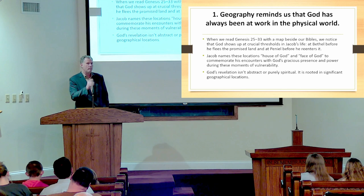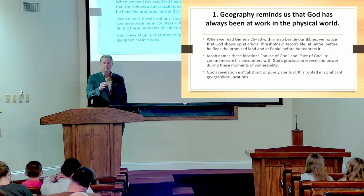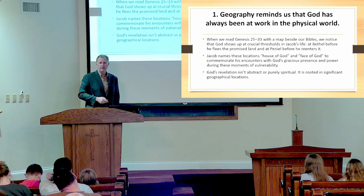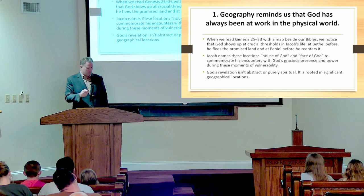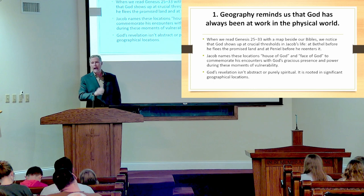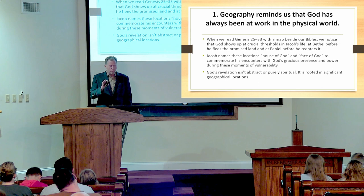With Jacob, he's going to go to Bethel and he's going to name that site Bethel, which means 'the house of God.' Then he's going to go all the way up to Haran and come back down. He's going to wrestle with God and name that place Peniel, which means 'I came face to face with God.' These places are real. Jacob names these places after God's providence is demonstrated at these sites. So God's revelation isn't abstract and it's not just purely spiritual — it's rooted in significant geographical locations.